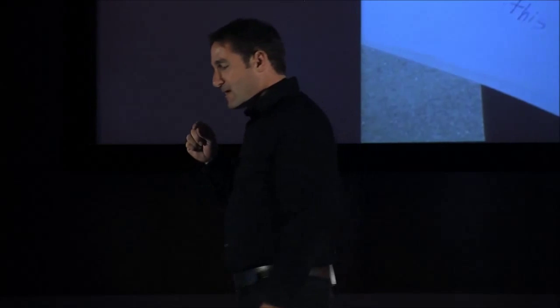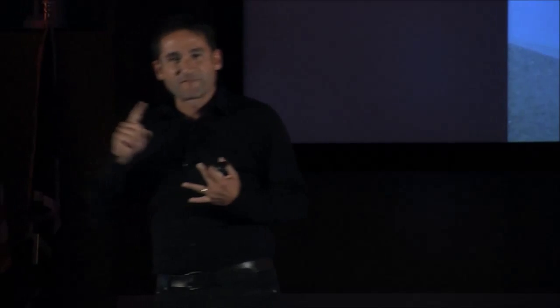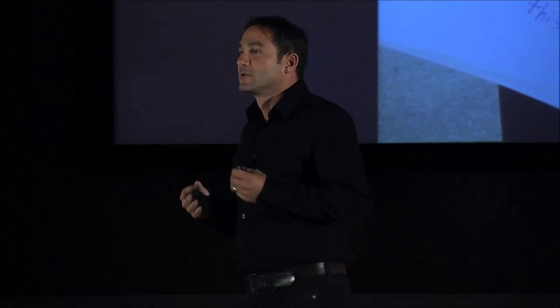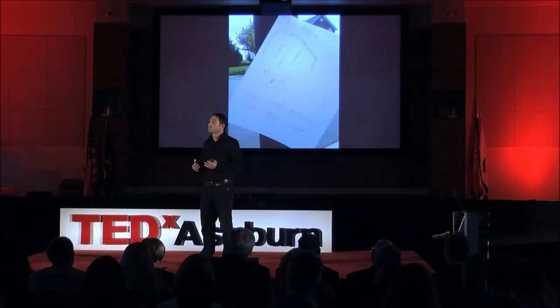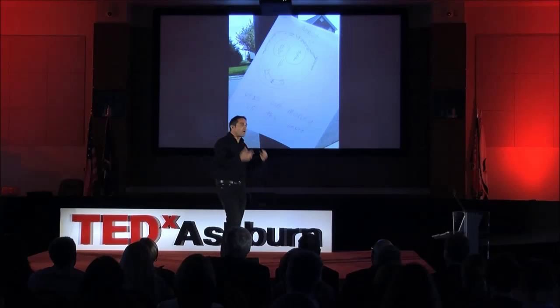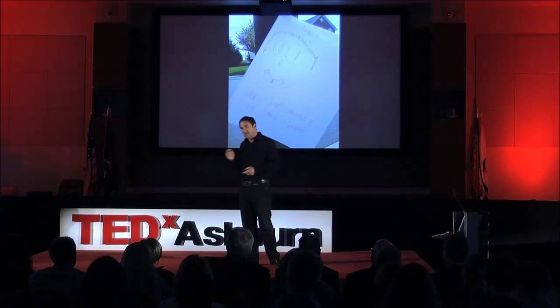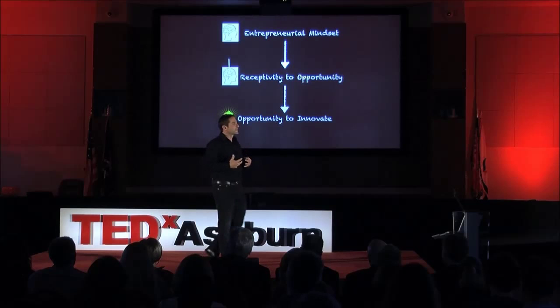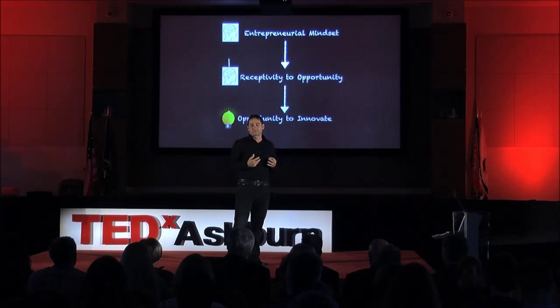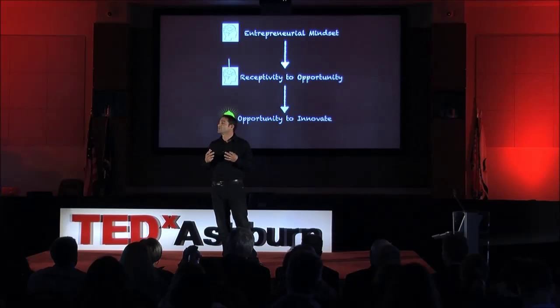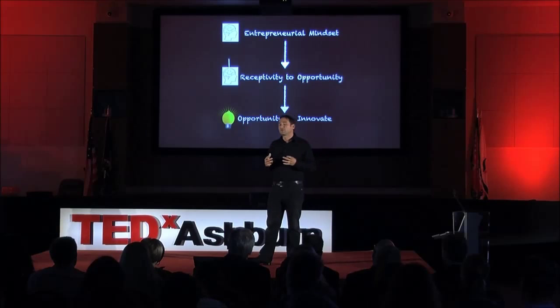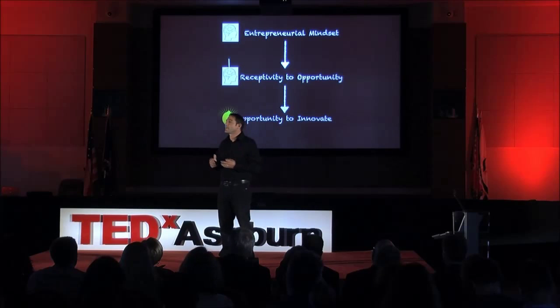This was her way to solve the problem of raising money for the baseball league. But here's the thing, whether it's a lemonade stand or taping a piece of paper to a lamppost, it starts at a young age. So why wait? Why wait to start developing this until later in life? And here's why. Because the sooner the entrepreneurial mindset is established and developed, the sooner the receptivity to opportunity exists. And the sooner the receptivity to opportunity exists, the opportunity to innovate goes up exponentially.